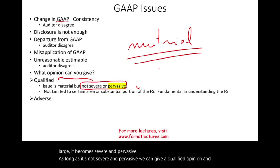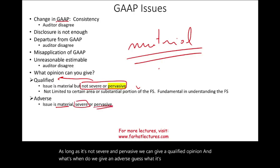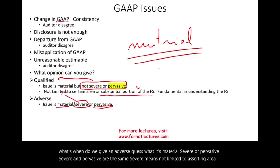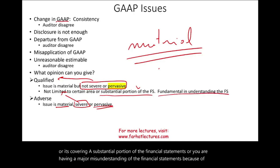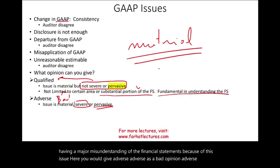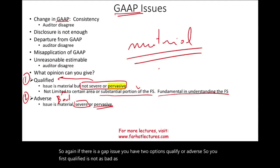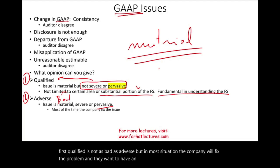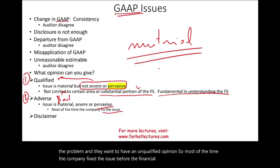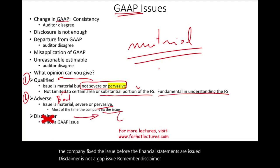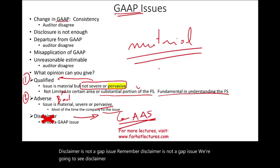An adverse opinion is given when the issue is material AND severe or pervasive — meaning it is not limited to a certain area, covers a substantial portion of the financial statements, or causes a major misunderstanding of the financial statements. Adverse is a bad opinion — the kiss of death. So for a GAAP issue, the two options are qualified or adverse. Most of the time, companies will fix the problem before the financial statements are issued in order to receive an unqualified opinion. Remember, disclaimer of opinion is not a GAAP issue — we will see disclaimer when we discuss GAAS.